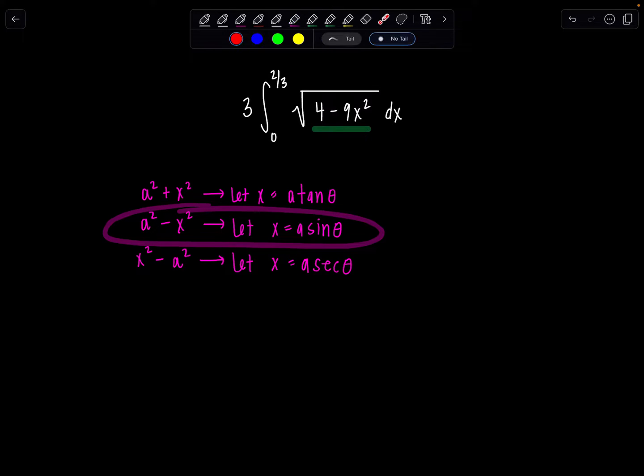Now sometimes this 9 will really trip students up. So what I want you to notice is 4 minus 9x² is 2² minus the quantity 3x squared. So you can see here, a is equal to 2 and 3x is my entire variable quantity.